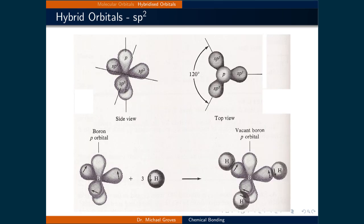Here is an image of the BH3 molecule showing the SP2 hybridized orbitals as well as the vacant PY orbital.